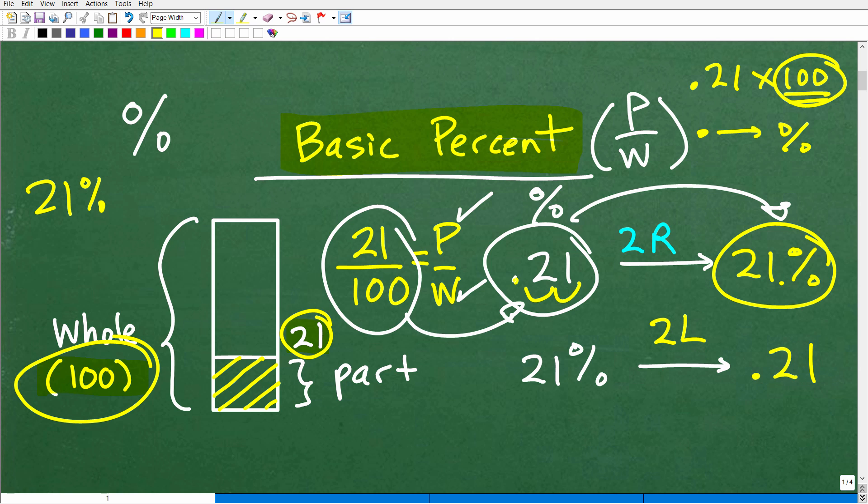So a percent is an expression of some part out of a whole, and you could just think of, if I'm talking about 21%, it's like having 21 out of 100. All right, now, as we indicated, we can go from a decimal to a percent, but as you do other type of percent problems, you need to also remember how to go from a percent to a decimal.